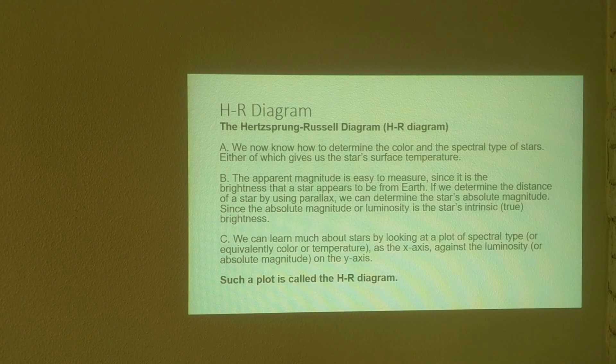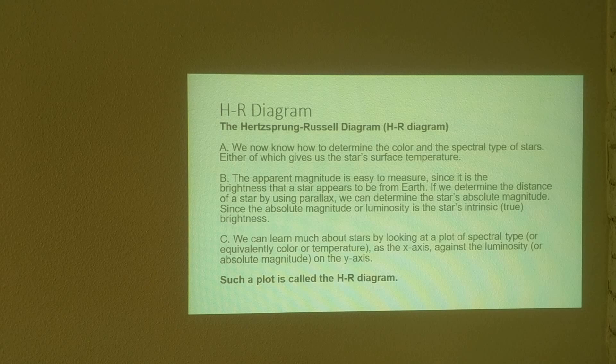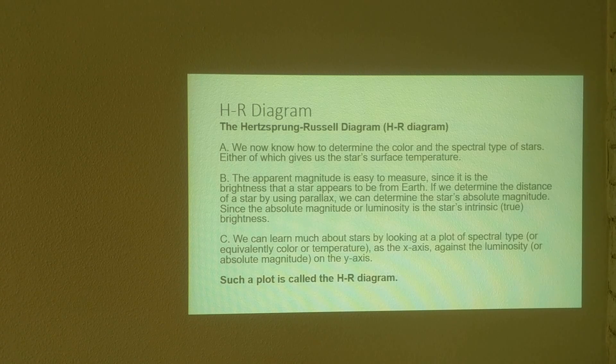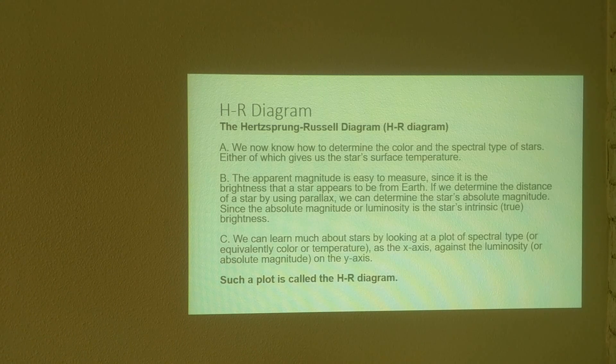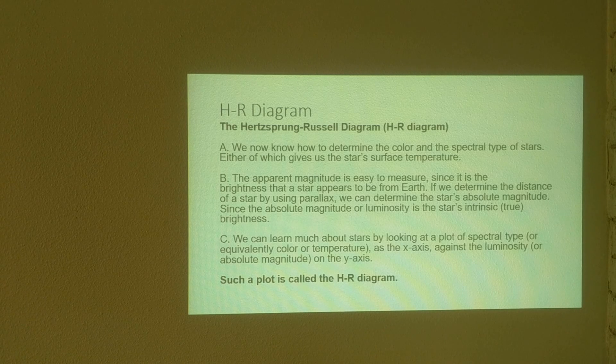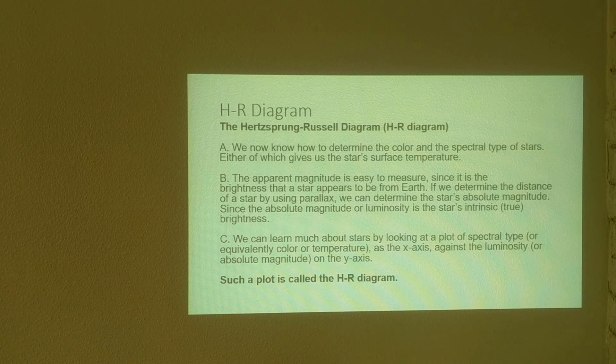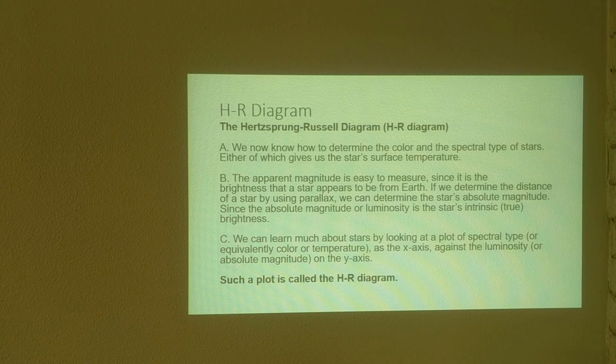Typically, we need to determine the distance using parallax or some other method and find the absolute magnitude or luminosity. Once we plot this on a diagram, this is called the HR diagram. So the HR diagram is simply a plot of the absolute magnitude versus the temperature, color or spectral type of the star.